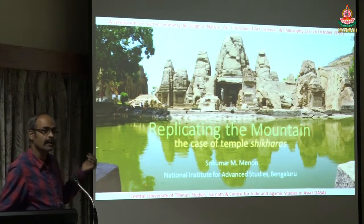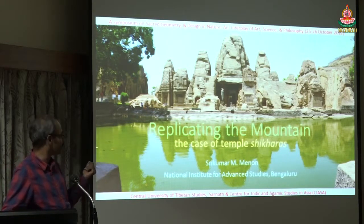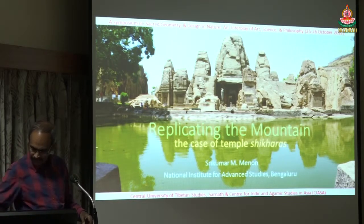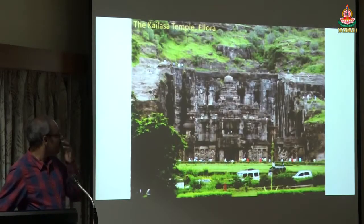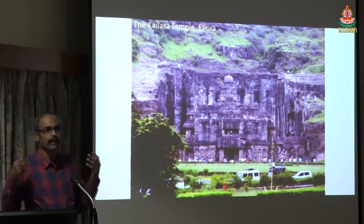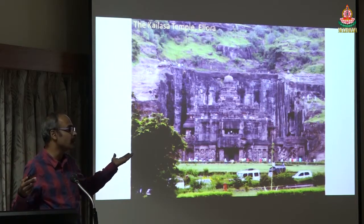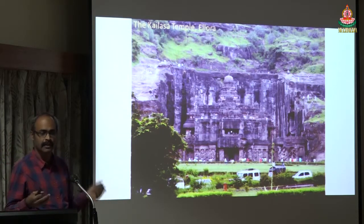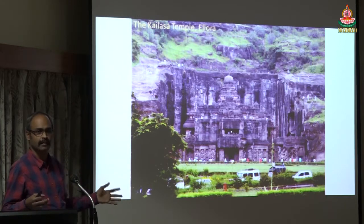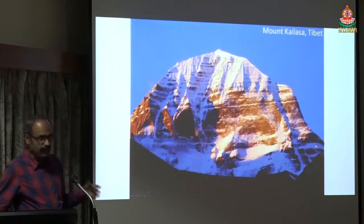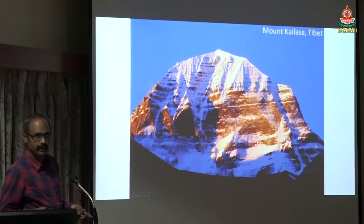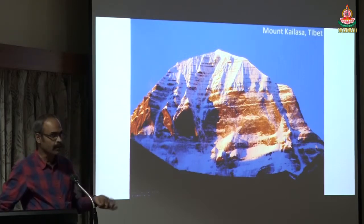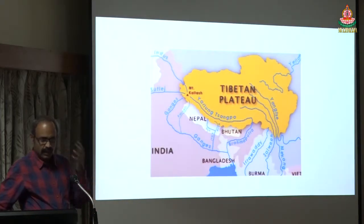This visual shows the rock-cut temple at Masrur in Himachal Pradesh, an 8th-century temple which is actually incomplete — we'll talk about it more towards the end. When we talk about the temple representing a mountain, the Kailasa Natha temple at Ellora immediately comes to mind. It's called the Kailasa Natha temple and is supposed to be a model of Kailasa. It represents Mount Kailasa in Tibet. The view we normally see is the snow cone, the summit of the peak. But when you look at the entire mountain, a story unfolds.